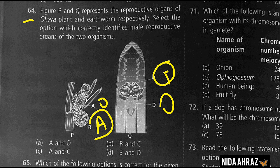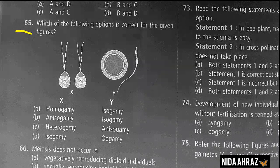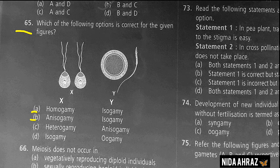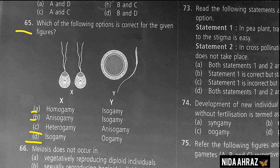Which of the following options is correct for the given figures showing gamete fusion types? The options include combinations of isogamy, heterogamy, anisogamy, and oogamy. The correct choice is option D: isogamy, isogamy, oogamy.